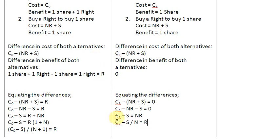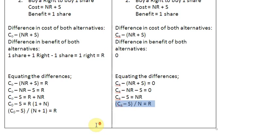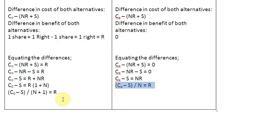So, to summarize: the value of a right after the X-rights date is (C_E minus S) divided by N, and before the X-rights date it is (C_O minus S) divided by (N plus 1). Thank you very much. Bye-bye.